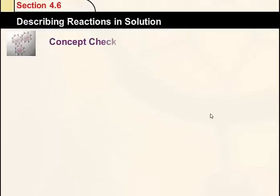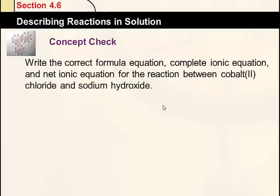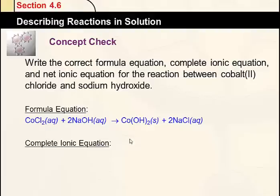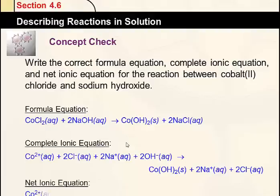Here's a concept check: write the correct formula equation, ionic equation, and net ionic equation for cobalt(II) chloride and sodium hydroxide. Go ahead and press pause and give it a try. Here are the answers. There is the formula equation, which is balanced. Here is the complete ionic equation. And here is the net ionic equation, where cobalt ions get together with 2 hydroxide ions to make Co(OH)2, which is the solid precipitate.